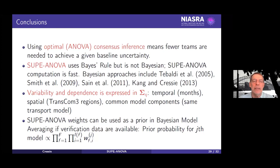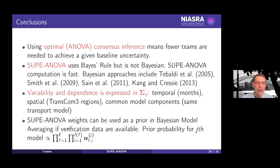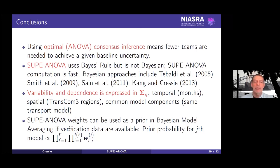There are Bayesian versions, and I've given some references. The fourth point is about a sort of omnibus probability weight that could be applied to each model, and we're suggesting it could be applied in Bayesian model averaging if you had independent verification data to update the prior probabilities of each model.